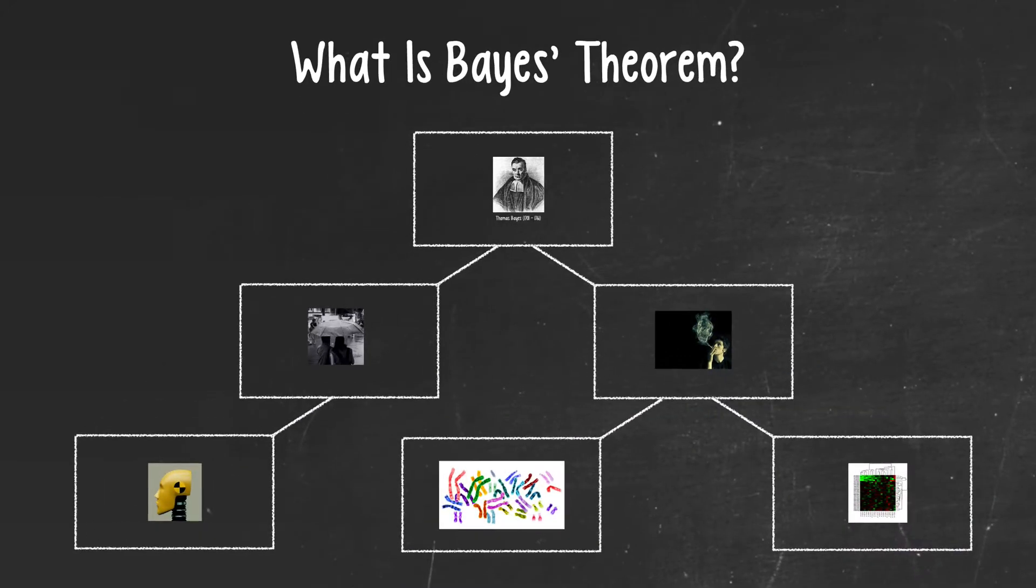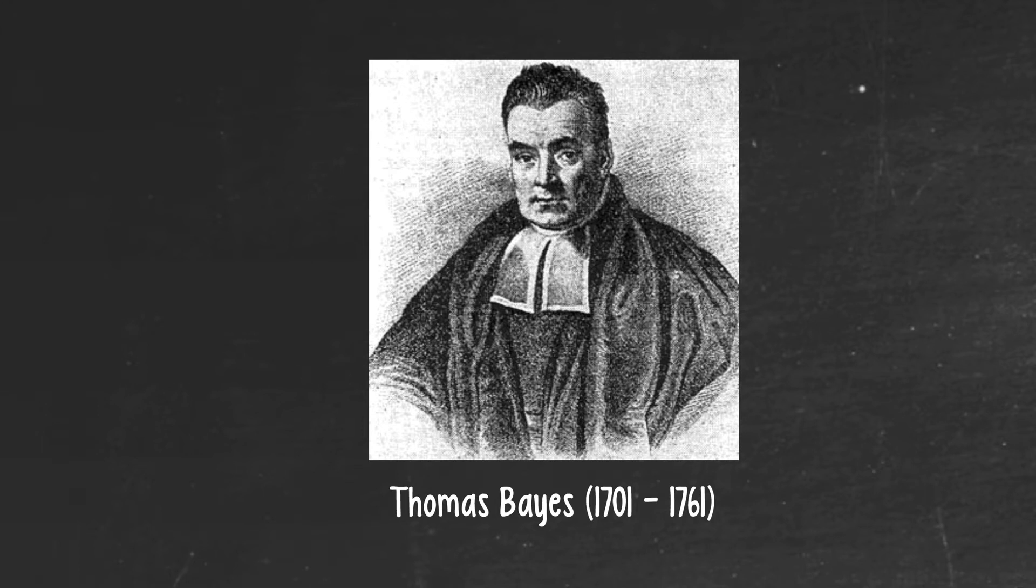So who was Bayes, and why should we care about his theorem? Thomas Bayes was an English priest who lived in the 18th century, and apart from being a man of the cloth, he was also a brilliant philosopher and mathematician. His great contribution to the field of probability is the theorem that bears his name, and although the theorem is quite easy to understand in its basic form, it has profound implications for the manner in which we weigh evidence and make decisions based upon it.